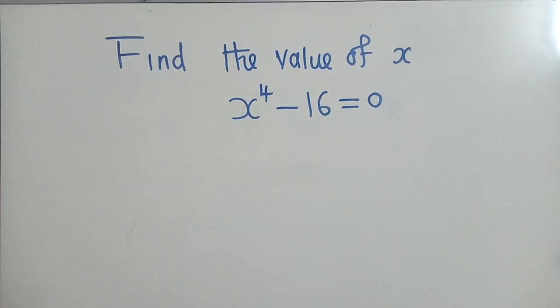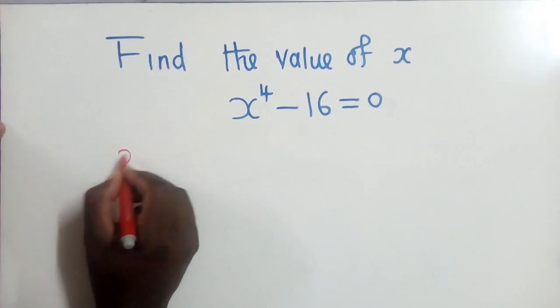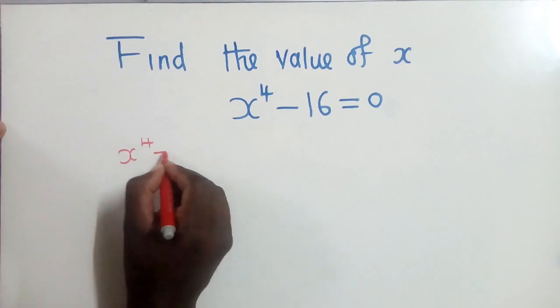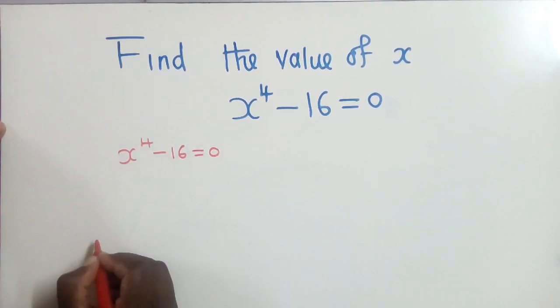So how do we find the value of x? Let us put it here. x to the power of 4 minus 16 equals 0.